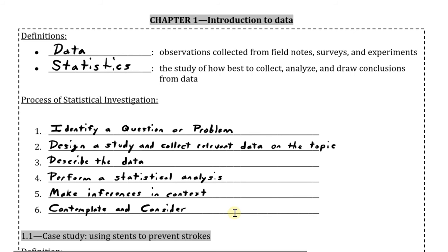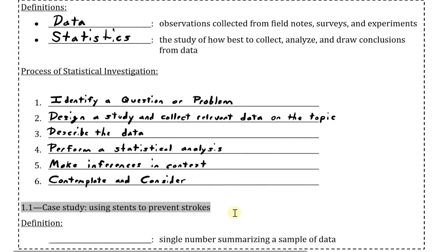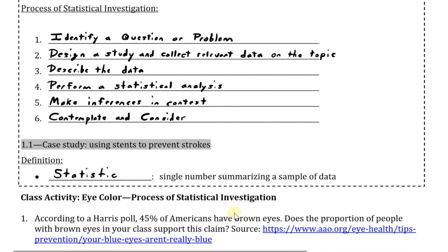We will look at a quick example of this, but before that we have one more definition — the definition of a statistic. A statistic is a single number summarizing a sample of data. There are many forms of a statistic we can have, one of which will be a simple proportion, which you will see in the coming example. Calculating statistics will be part of step three in our above process, and the fact that it is a value describing a sample is another note to keep in mind — that will be very important moving forward.